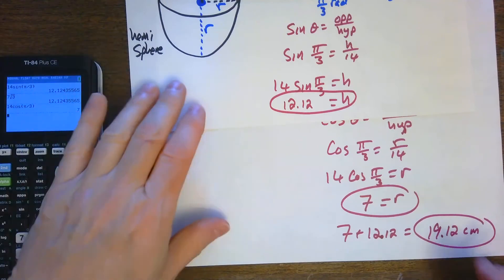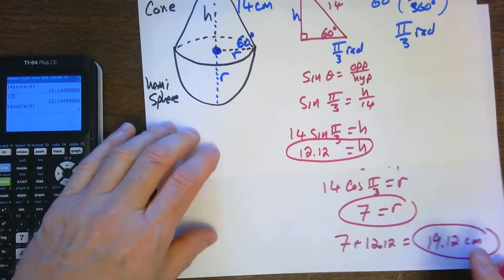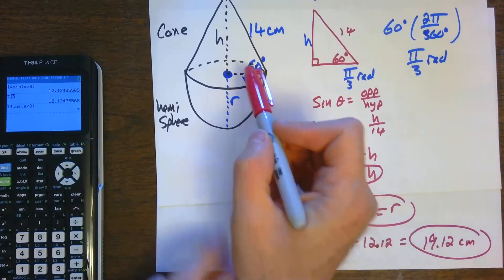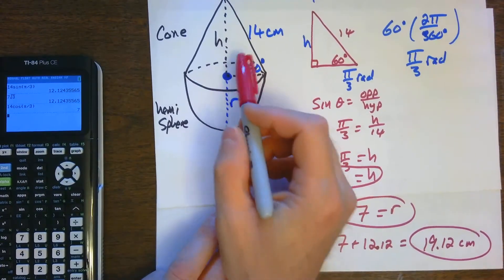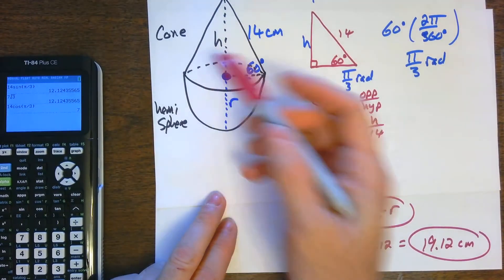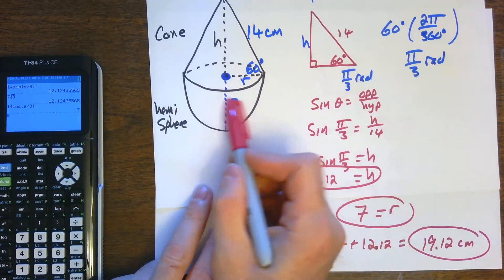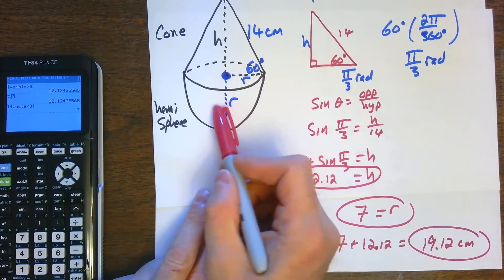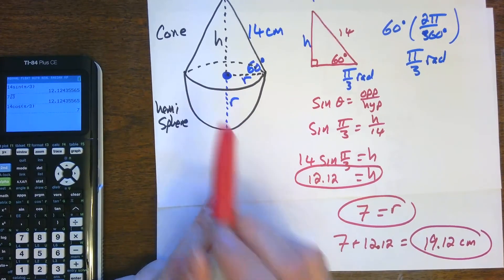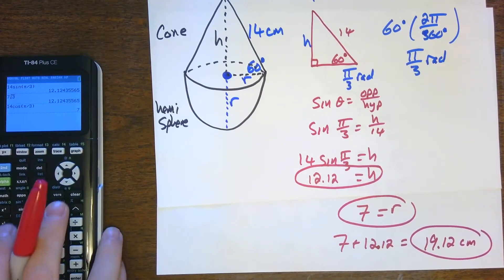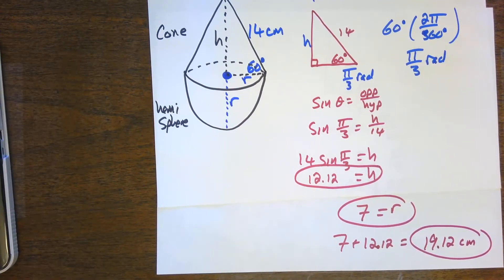Everything else after this point would be fairly easy. Now that we know the radius and height, we could find the volume of the cone using the formula, find the volume of the hemisphere, and add them together — half the sphere plus the cone. I think everything else after this would be fairly simple.